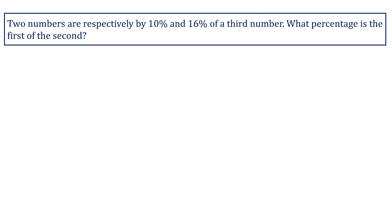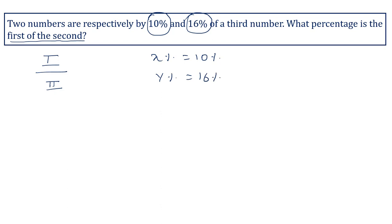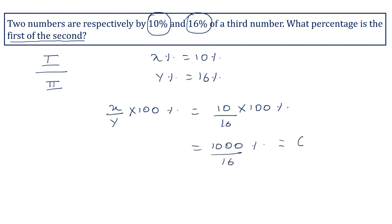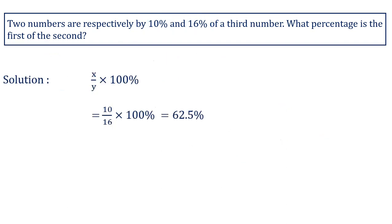Two numbers are respectively 10 percent and 16 percent of a third number. What percentage is the first of the second? First is compared with the second, so put first in the numerator and second in the denominator. x percent equals 10 percent and y percent equals 16 percent. Using the formula x upon y into 100 percent: 10 upon 16 into 100 percent equals 1000 upon 16, which gives 62.5 percent. So 62.5 percent is the first of the second.